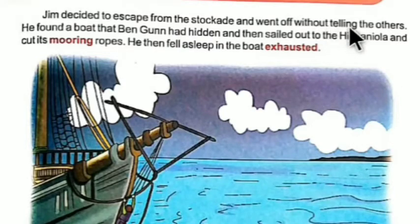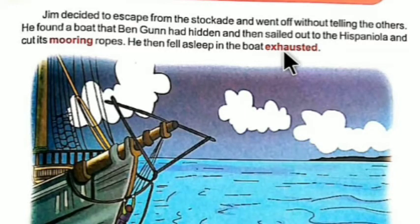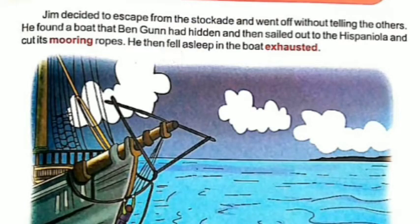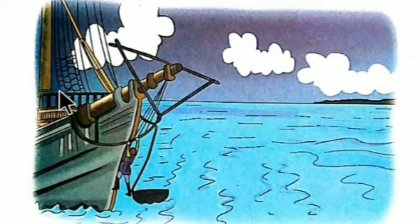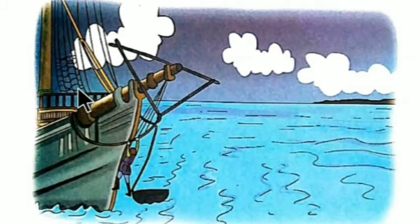Jim escaped from the stockade and found a boat that Ben Gunn had hidden. He sailed out to the Hispaniola and cut its mooring rope, then fell asleep in the boat, exhausted. Mooring means the cable by which a ship is held; exhausted means tired. With the rope cut, the ship drifted freely with the ocean current while Jim slept aboard.